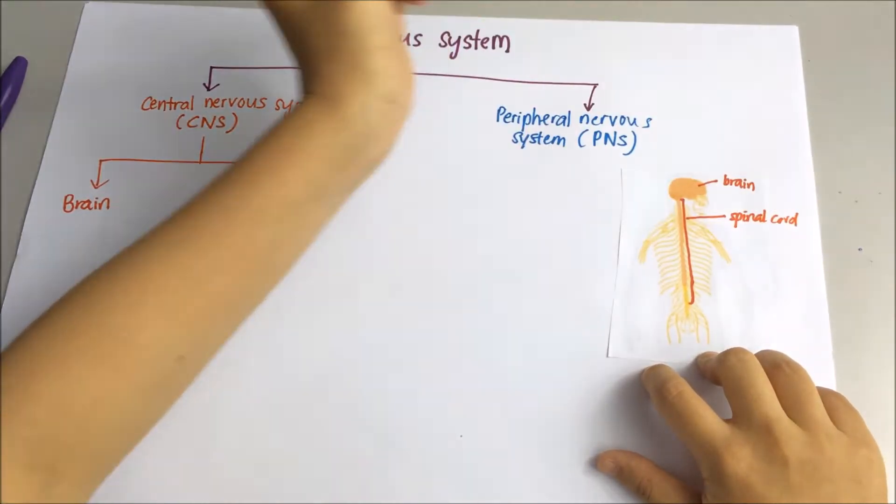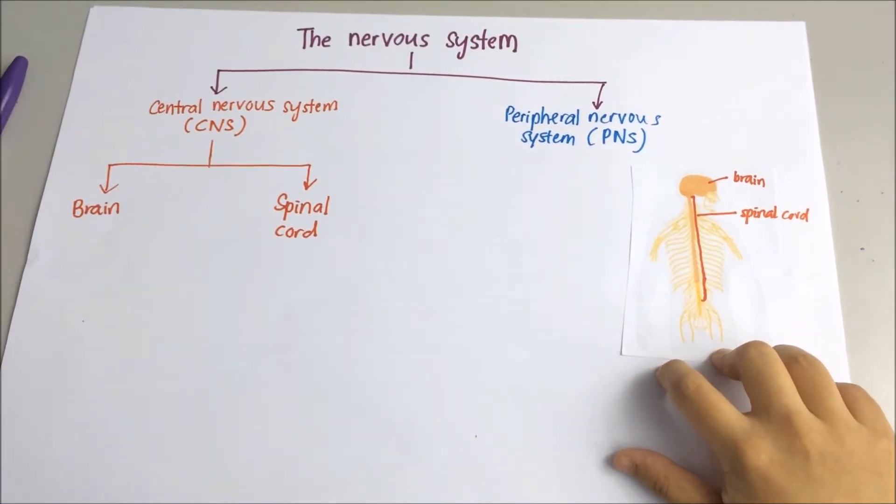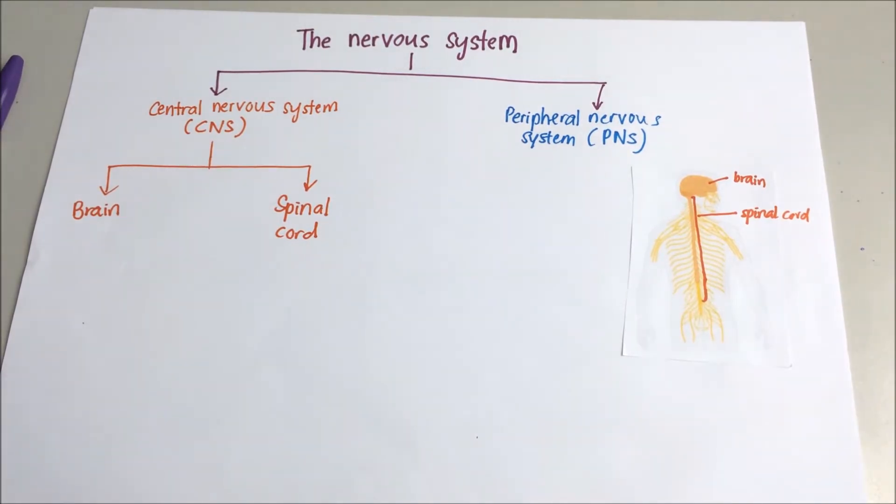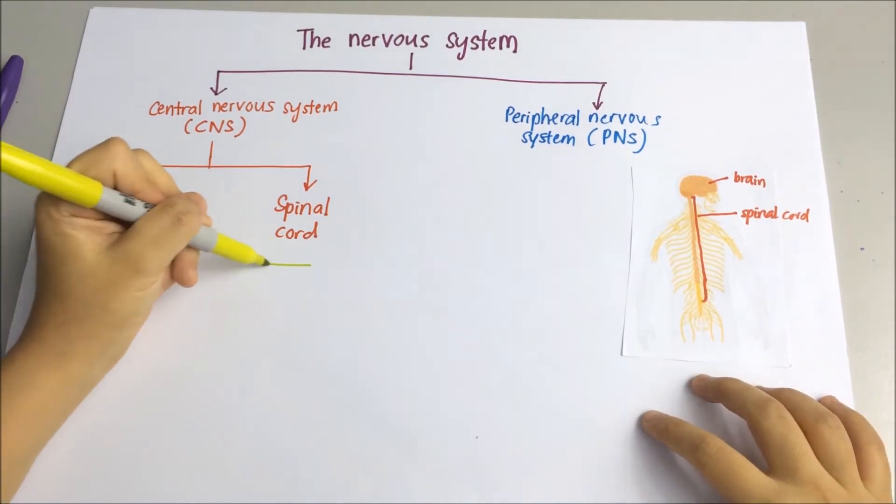And this is the spinal cord. It is a long bundle of nerve tissue extends from the lower part of the brain down through spine.